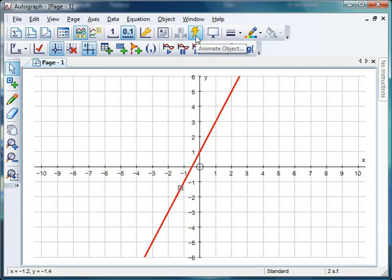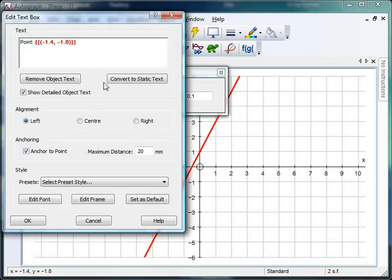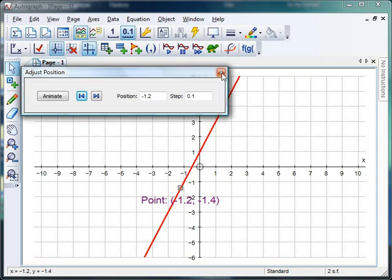But wait a minute, what's going on here? This little lightning bolt has appeared. If I click on that, what I can actually do is use my right and left buttons to move that point up and down. And of course, with that point selected, if I just open up a text box and click OK, then that will actually keep a track of the coordinates of that point.